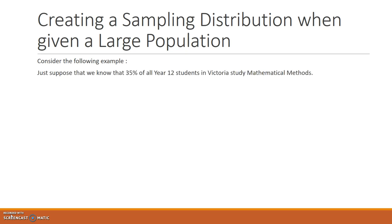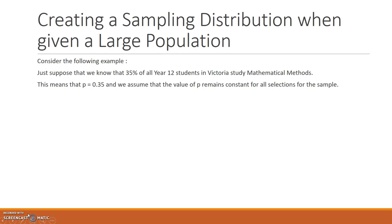Just suppose we know that 35% of all Year 12 students in Victoria study Mathematical Methods. In this question we have a very large population — all Year 12 students in Victoria. This means that the population proportion P is 0.35, and we assume that the value of P remains constant for all selections for the sample.